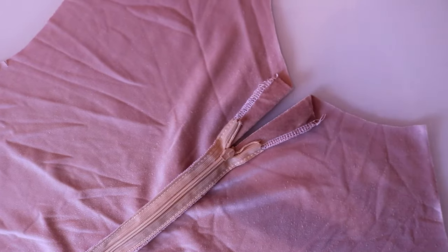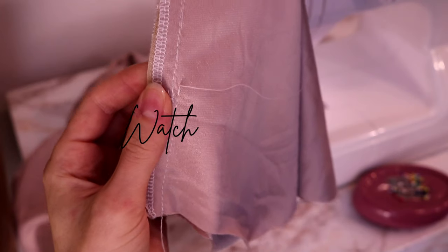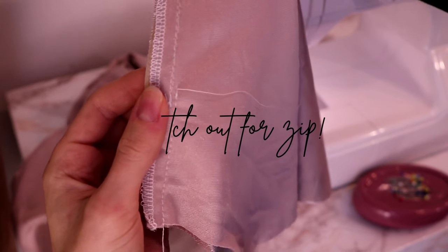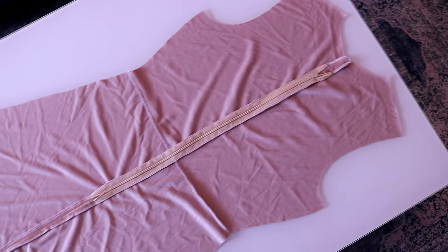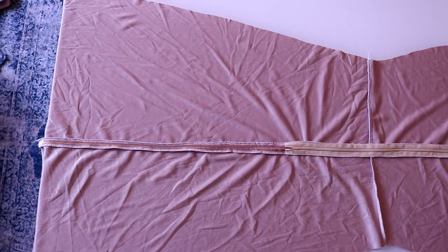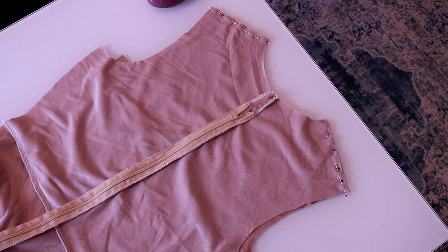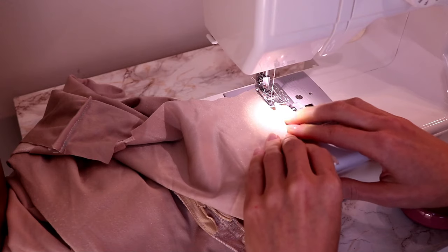Now it's time for the seam above the zipper. Watch out for the zip. On to the shoulder seams. With right sides together, pin front to back at shoulders and stitch with a straight stitch.